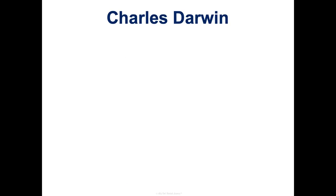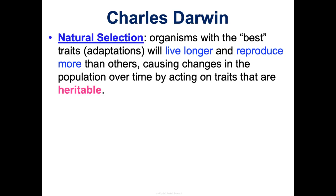Here's what Darwin saw: left unchecked, the number of organisms in a species will increase. But in nature, populations tend to remain stable — they don't just increase exponentially — because environmental resources are limited. He also saw that individuals in a population are not identical: they all have varying characteristics. No two tortoises are the same. And a lot of this variation is heritable, meaning traits they inherited in their genes.